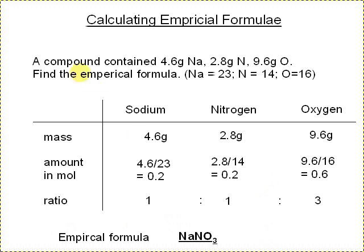Here's the second example. It says a compound contained 4.6 grams of sodium, 2.8 of nitrogen, 9.6 of oxygen. Find the empirical formula, and here you're given the MR values, or the relative atomic masses. So putting this in a table, there are the masses that you're given. We're going to work out the amount in mole by taking the mass, divide it by the relative atomic mass, or the MR.